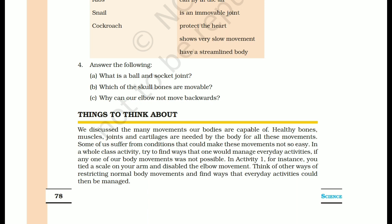Remember to learn all the joints and the movements they allow. As extra information: the wrist and ankle have a gliding joint, because the rotation movement of both is similar. This is not in the textbook but useful to know.